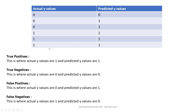Similarly, there is true negatives — where the actual value is 0 and the predicted value is also 0. Then we have false positives, where there is 0 in the actual value and 1 in the predicted value. And finally, false negative is where we have 1 in the actual Y value and 0 in the predicted. In our example we don't have that, but let us just take hold of the concept itself.